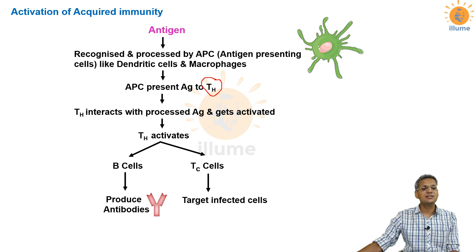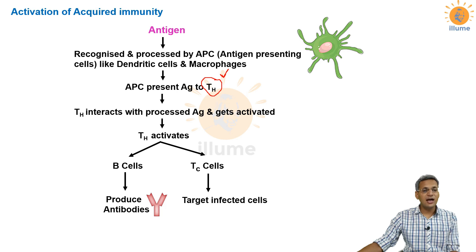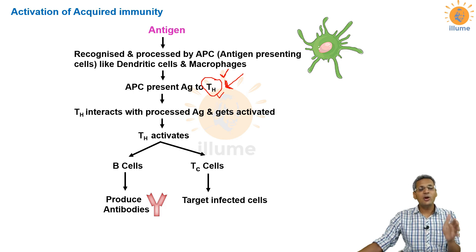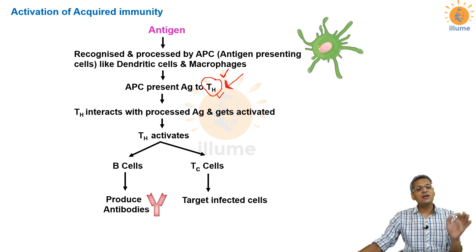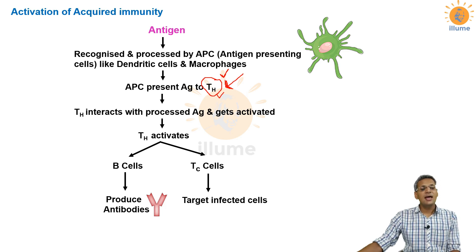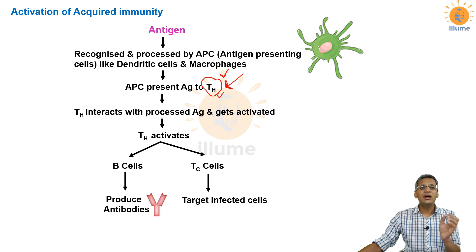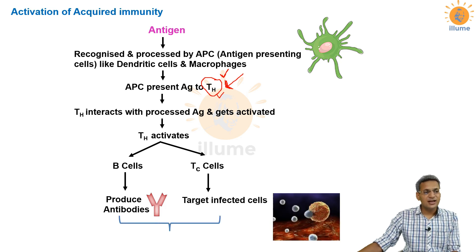The first lymphocytes to be activated are T helper cells — this is a very important point. HIV's prime target is T helper cells. When HIV enters the body it targets T helper cells, and their numbers slowly decrease. A deficiency of T helper cells hampers the activation of immunity, leading to immunodeficiency — which is why HIV causes immunodeficiency (AIDS).